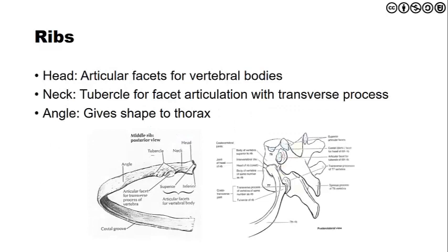The ribs consist of the head, neck, tubercle, and costal angle. The head is the articular area for the facets, articulating with the inferior and superior demi-facets of the vertebral bodies both above and below. The neck is where we find the facet articulation for the transverse process and the tubercle articular facet. The costal angle gives the shape to the thoracic spine — it is where we begin to see the curvature that gives shape to the ribcage.